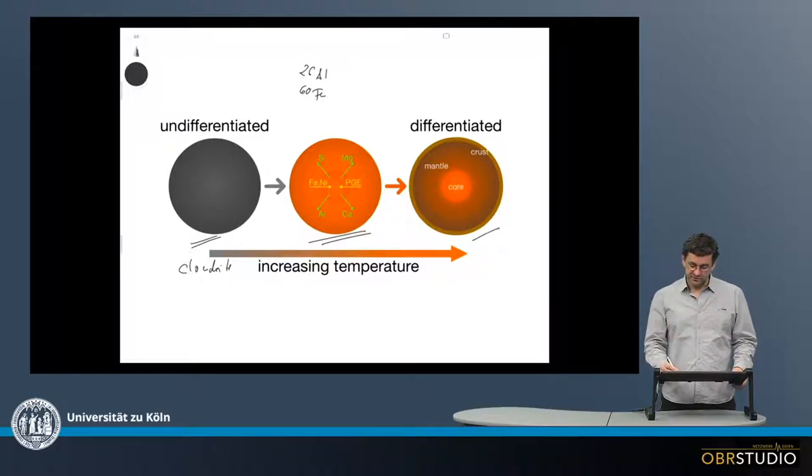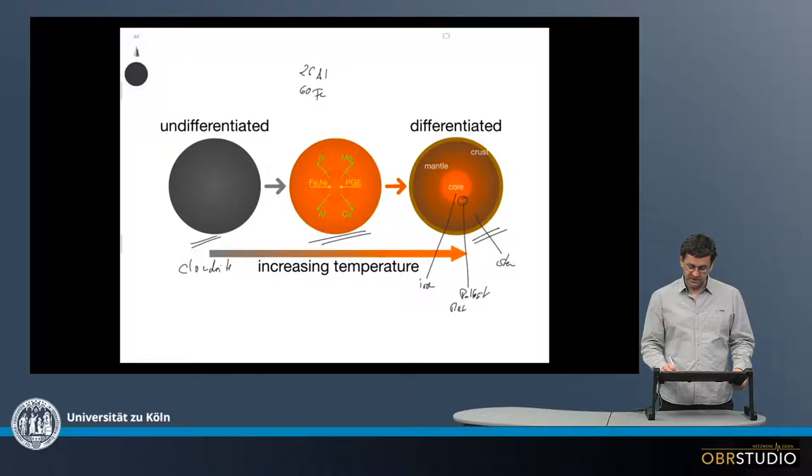And then there are the differentiated planetesimals, from which we get, for example, the stone meteorites from the crust, the iron meteorites from the core, and then in between there's something like pallasite or mesosiderite meteorites.